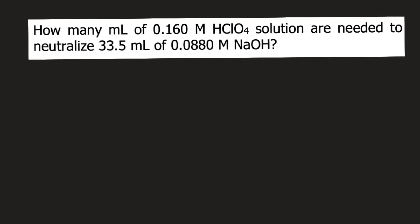The first thing you need to do is write the acid-base reaction between HClO4, perchloric acid, and sodium hydroxide, NaOH. So we have HClO4, your acid. Your base is NaOH.